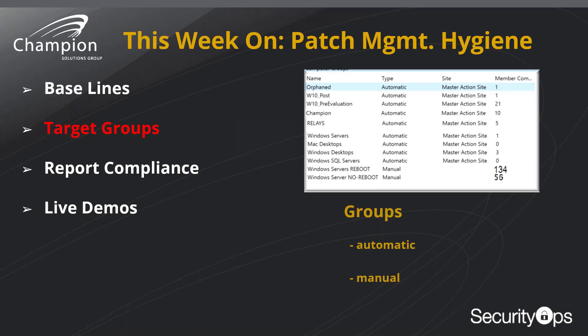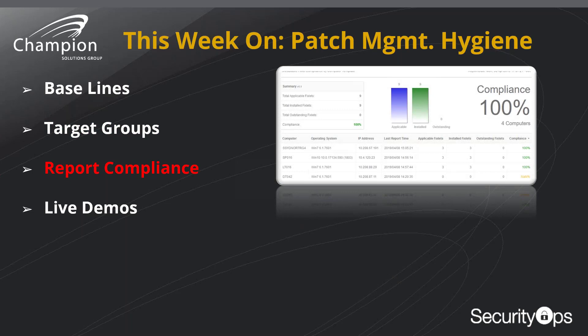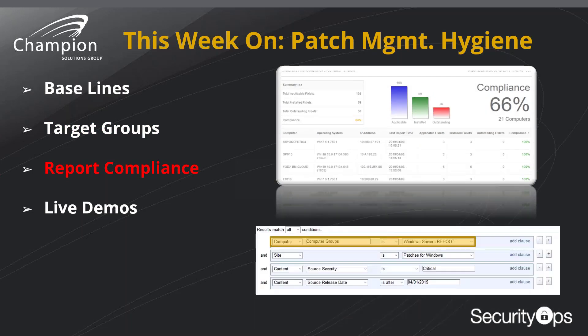Another type of group in BigFix is a manual group. Some servers during patching are just not allowed to reboot, so we have to manage them individually. The concept here is to organize all of our different servers and desktops so that when we take an action against them we don't have to individually select them. We can also reuse compliance reports and add the different groups we created to show compliancy across all desktops, servers, exchange servers, or SQL servers.